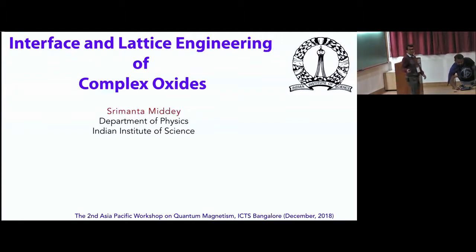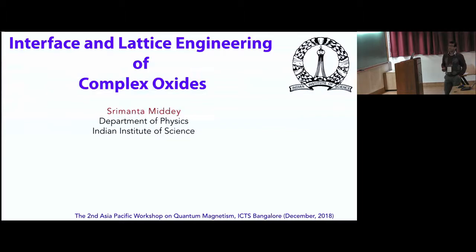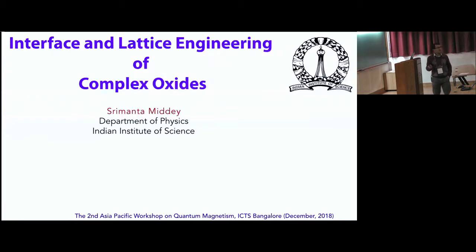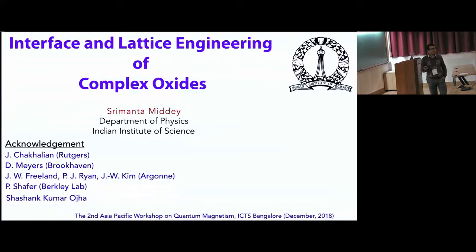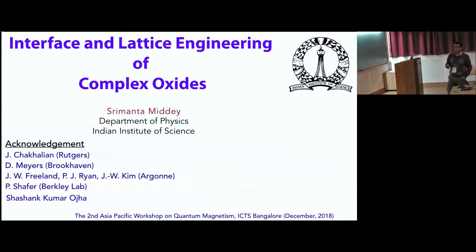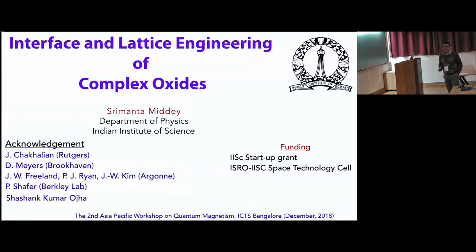Thank you, Chairman. I would like to thank Supro for inviting me to this workshop. Today I'm going to talk about interface and lattice engineering of complex oxides. I'll show examples of how you can solve long-standing problems of correlated oxides using interfaces, and in the second part, how lattice engineering can generate frustrated magnets. Most of this work was done when I was a post-doc in Jack Sackleian's group at University of Arkansas, now at Rutgers. Results include synchrotron-based measurements at Brookhaven, Argon, and Berkeley National Labs. Current work is being done by my student Hossang Kumar Hoja, with funding from IISC Startup Grant and ISRO IISC Space Technology Center.